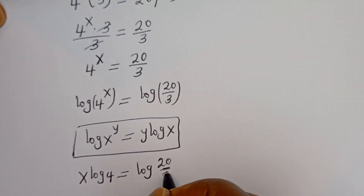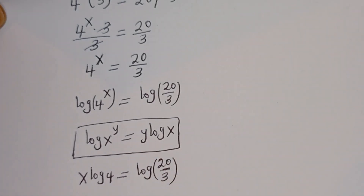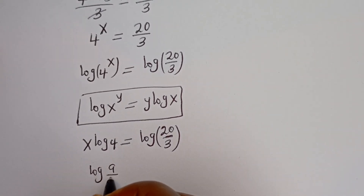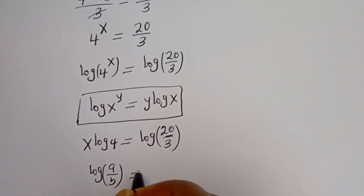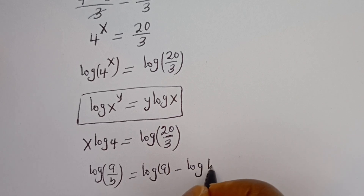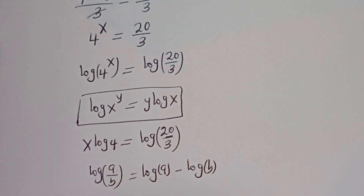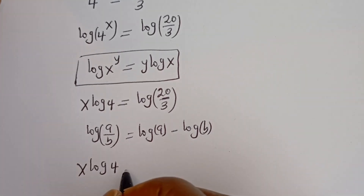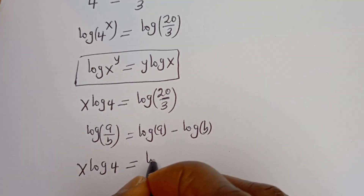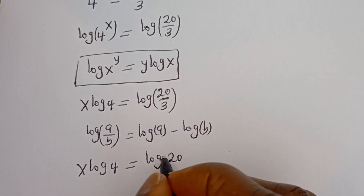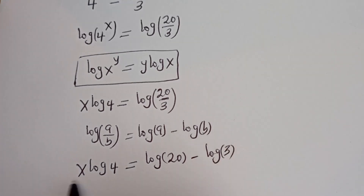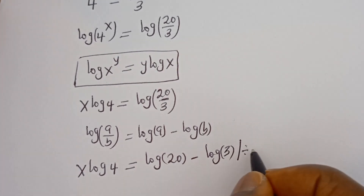Take note of this: if you have log A divided by B, this is equal to log A minus log B. So this can be written as: s log 4 is equal to log 20 minus log 3. Now let's divide all through by log 4.